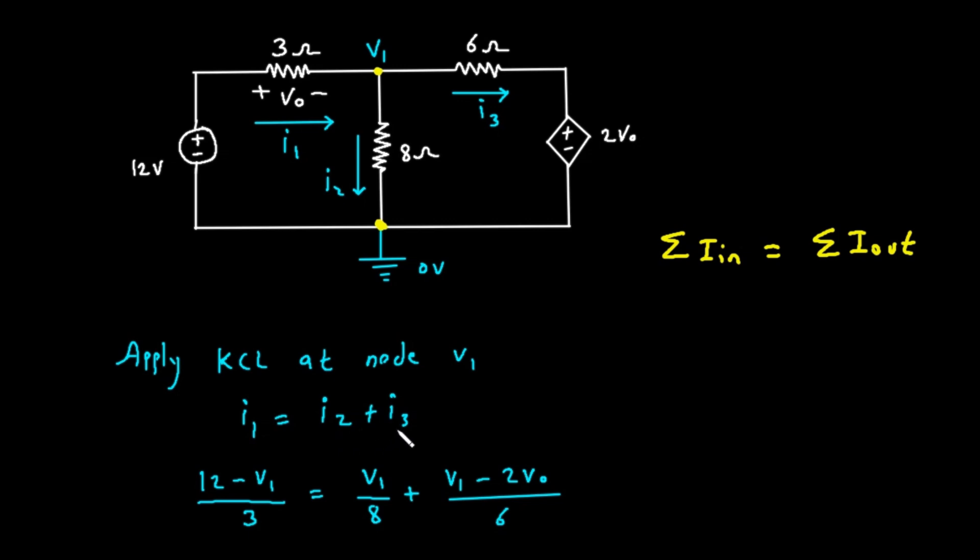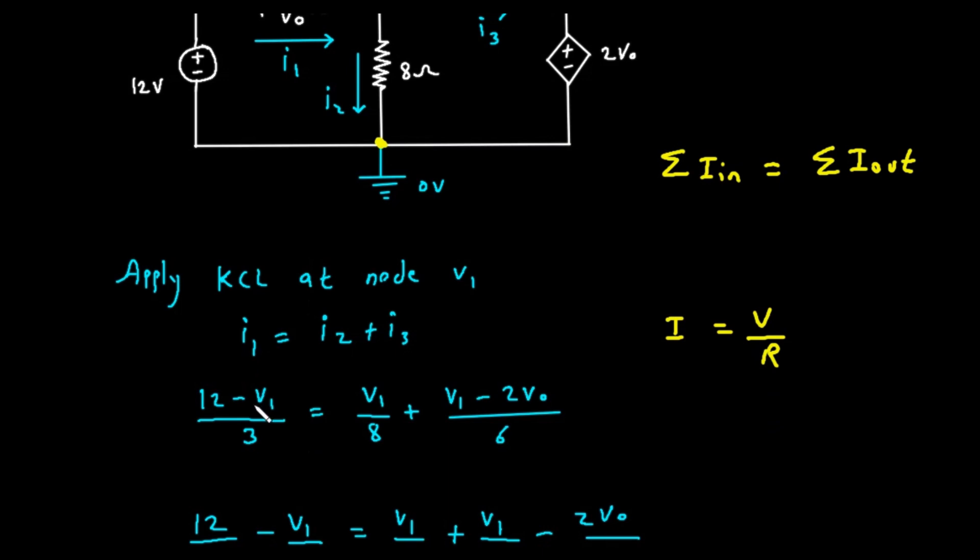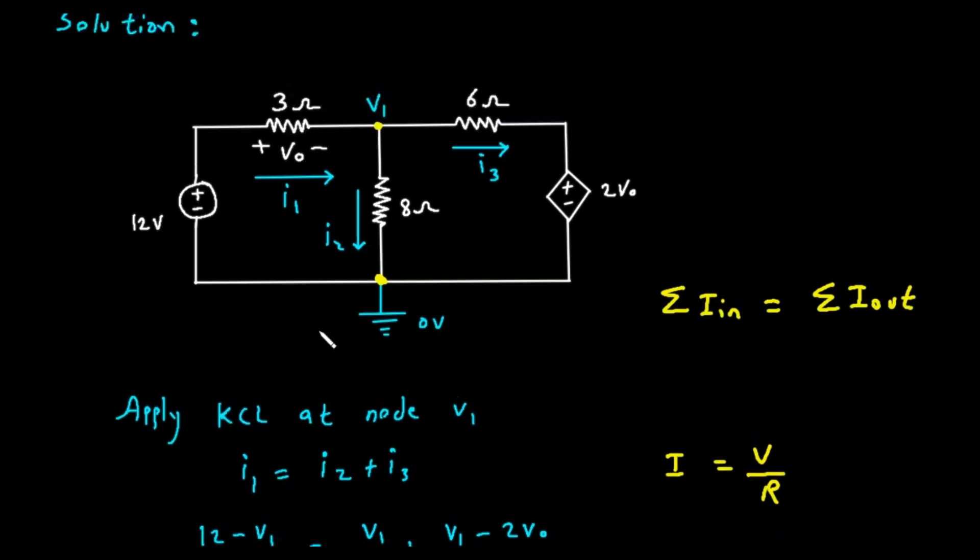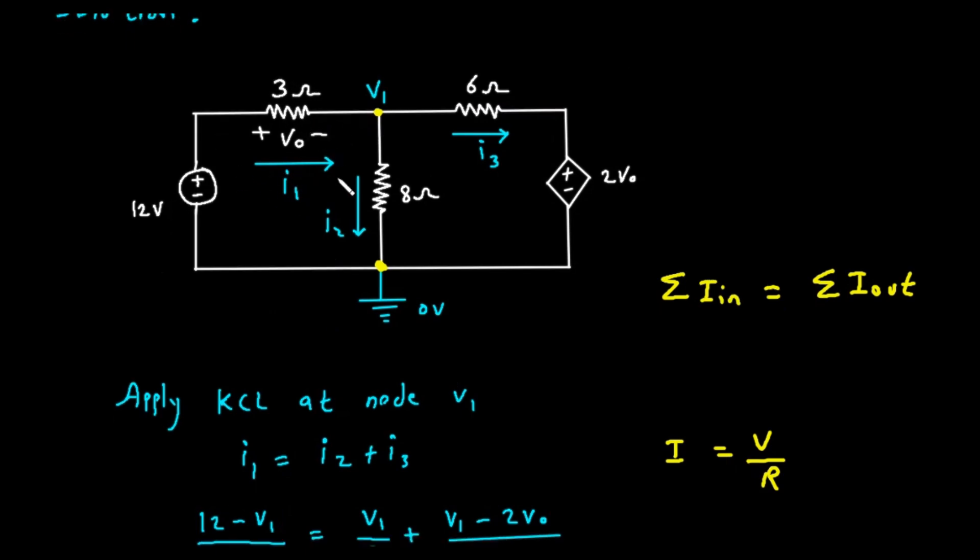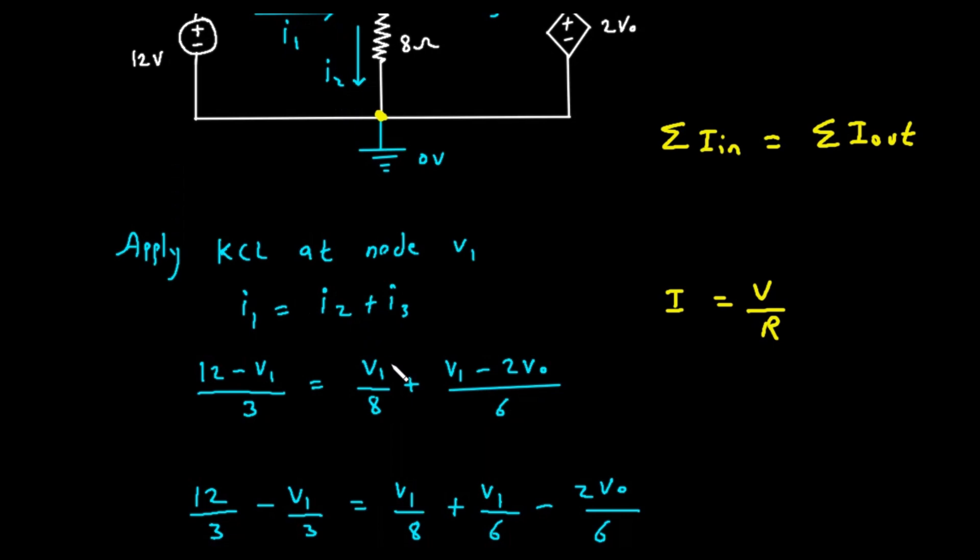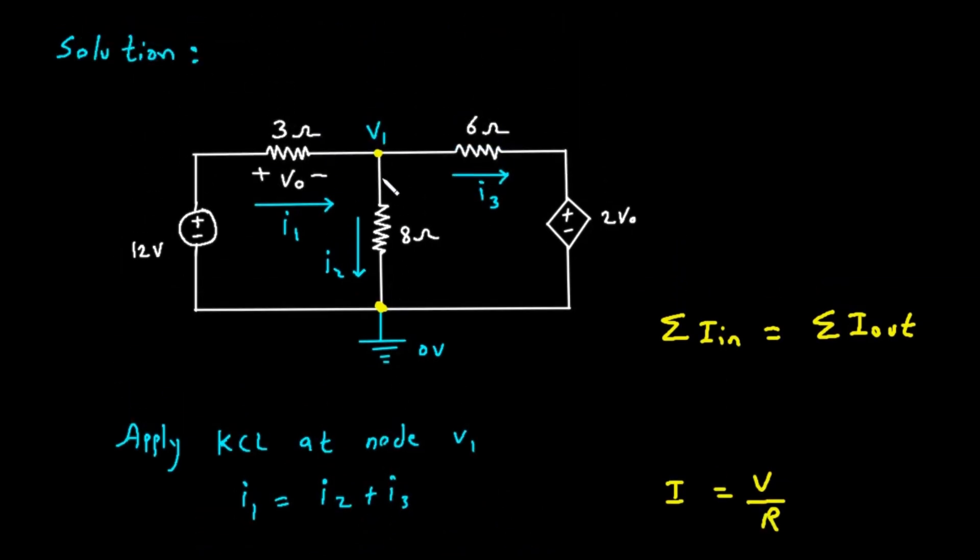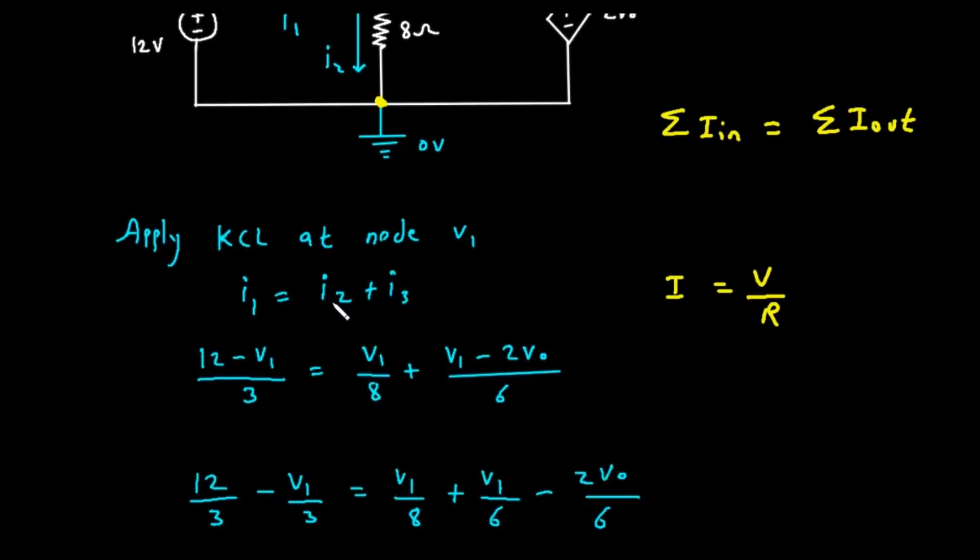I sub 2 is the current flowing out of node V sub 1, down through the 8 ohm resistor to ground. I sub 3 is the current flowing out of node V sub 1, to the right through the 6 ohm resistor. According to KCL, the current entering must equal the sum of the currents leaving. So our KCL equation is I sub 1 equals I sub 2 plus I sub 3. Now, we need to express these currents using Ohm's Law, which is current equals voltage divided by resistance.